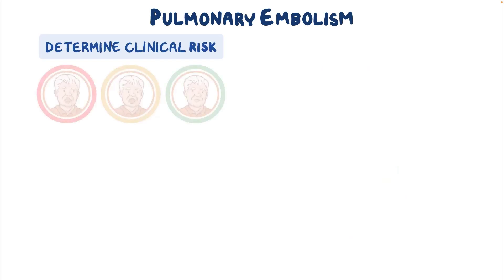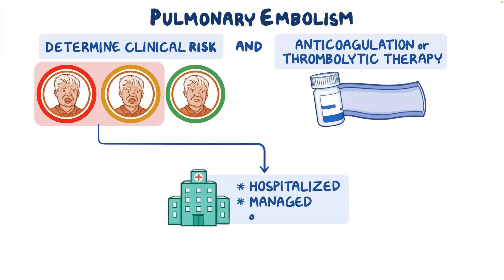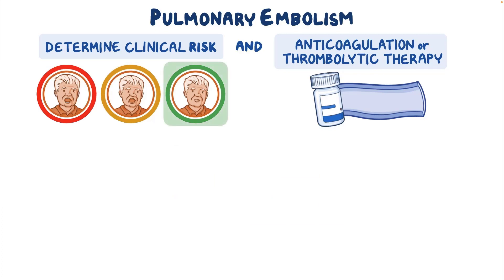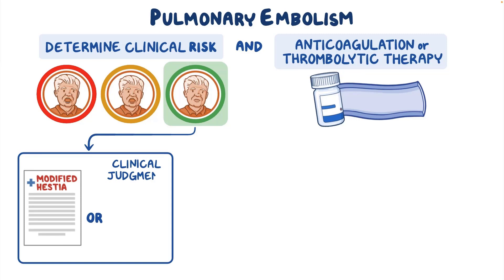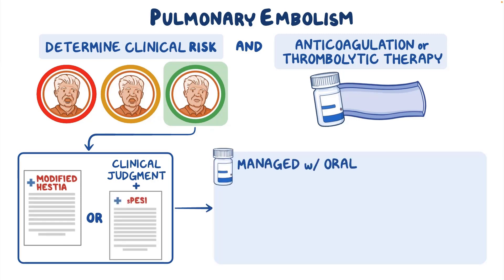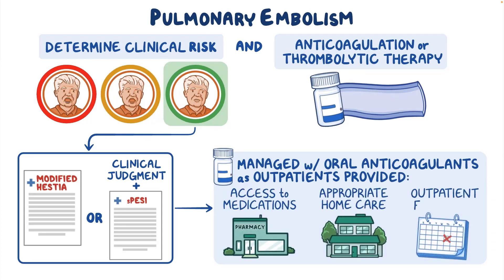As a quick recap, management of patients with PE includes determining their clinical risk for adverse outcomes and initiating anticoagulation or thrombolytic therapy as appropriate. Patients at high or intermediate risk should be hospitalized and managed as inpatients. Patients who are at low risk for complications according to modified Hestia criteria or clinician judgment plus the S-PESI score can be managed with oral anticoagulants as outpatients, provided they have adequate access to medications, appropriate home care, and outpatient follow-up.